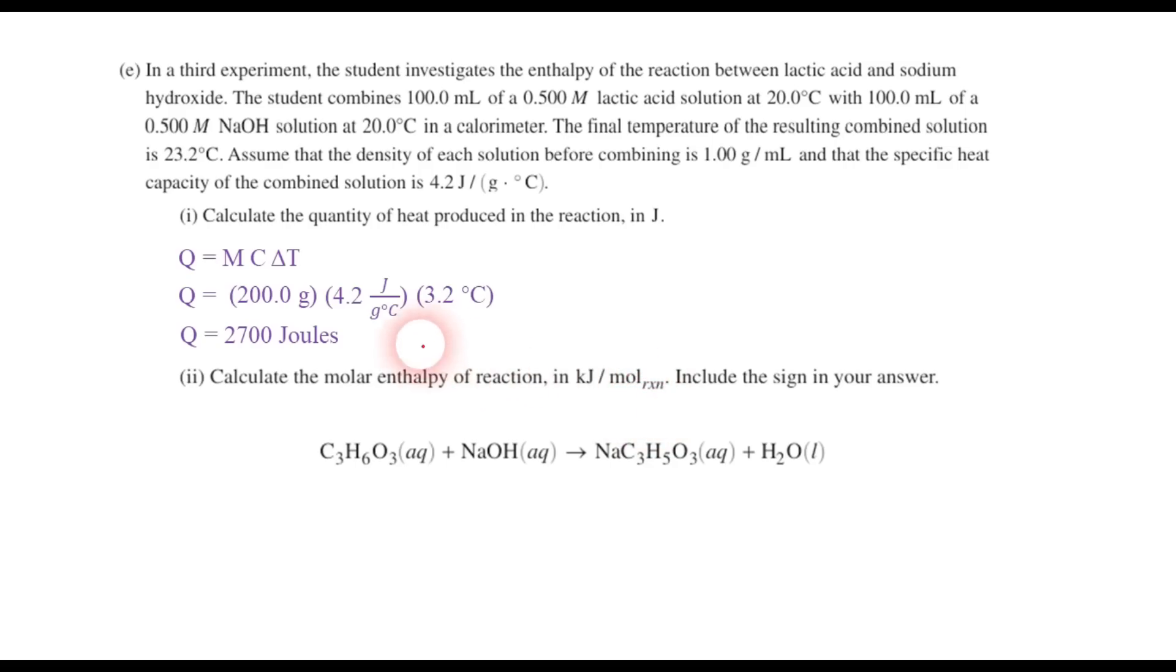Now part two says calculate the molar enthalpy of reaction in kilojoules per mole of reaction and include the sign. Well, we know that we have joules or kilojoules we can calculate from part one. But what about the moles? Well, we have to remember that in the lactic acid, we took 0.1 liters times 0.5 molar lactic acid. So when you multiply that, that's 0.0500 moles of lactic acid. And guess what? We had the same number of moles of sodium hydroxide. It was 100 milliliters or 0.1 liters of 0.5 molar sodium hydroxide. So once again, that's 0.0500 moles of sodium hydroxide. If we look at the stoichiometry of this reaction, it's a one to one ratio. So that means 0.05 moles of lactic acid and 0.05 moles of sodium hydroxide, one to one to one, we're going to have 0.05 moles of each of our products. So that makes the stoichiometry pretty nice here.